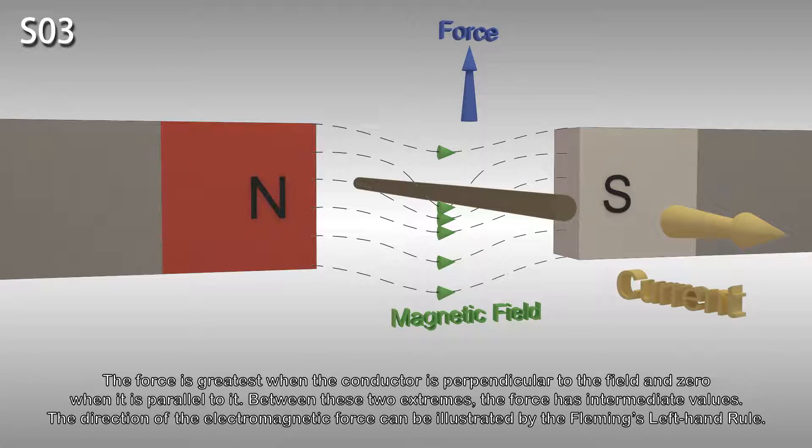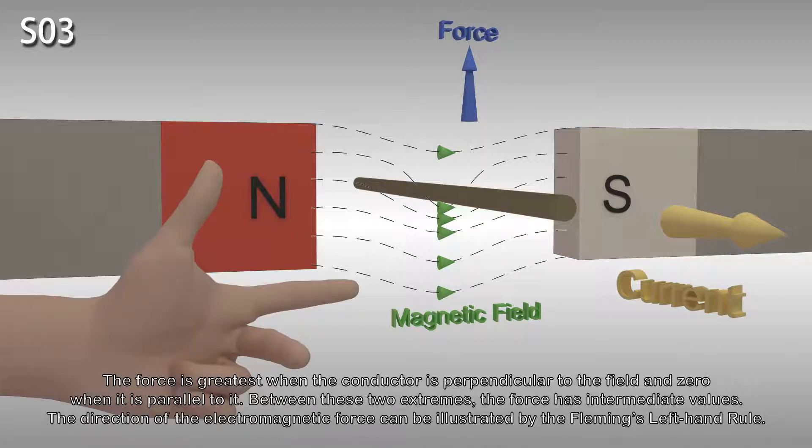The force is greatest when the conductor is perpendicular to the field and zero when it is parallel to it. Between these two extremes, the force has intermediate values.